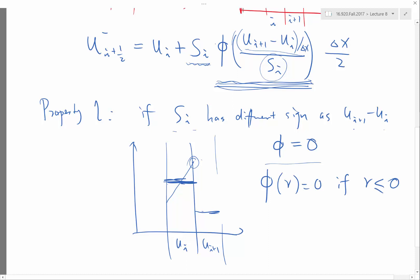phi for all r has to be zero if r is less than or equal to zero. So r is this argument. So r would be negative if the numerator and denominator have different signs.